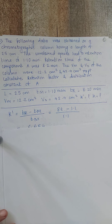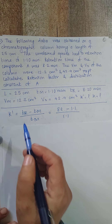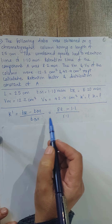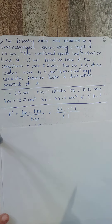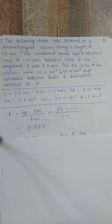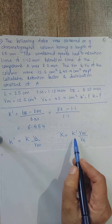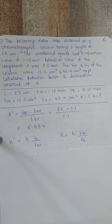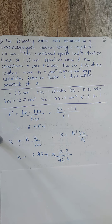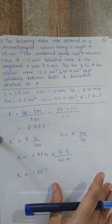To solve: first find k'. k' = (Tr − Tm) / Tm = (8.2 − 1.1) / 1.1 = 6.454. Next find the distribution constant k. Since k' = k × (Vs / Vm), rearranging gives k = k' × (Vm / Vs) = 6.454 × 12.2 / 42.4 = 1.857.